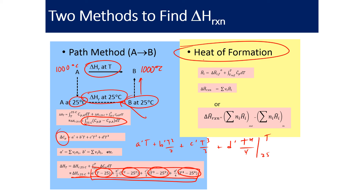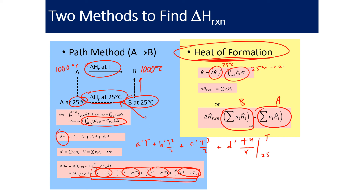The second method is to start with heats of formation. We look at the heats of formation of products B minus heats of formation of reactants A. Since those are reported at 25 degrees Celsius, we use the heat capacity integral to go from 25 up to our target temperature, for example 1,000 degrees. That's how we compute the heat of reaction using the heat of formation method.